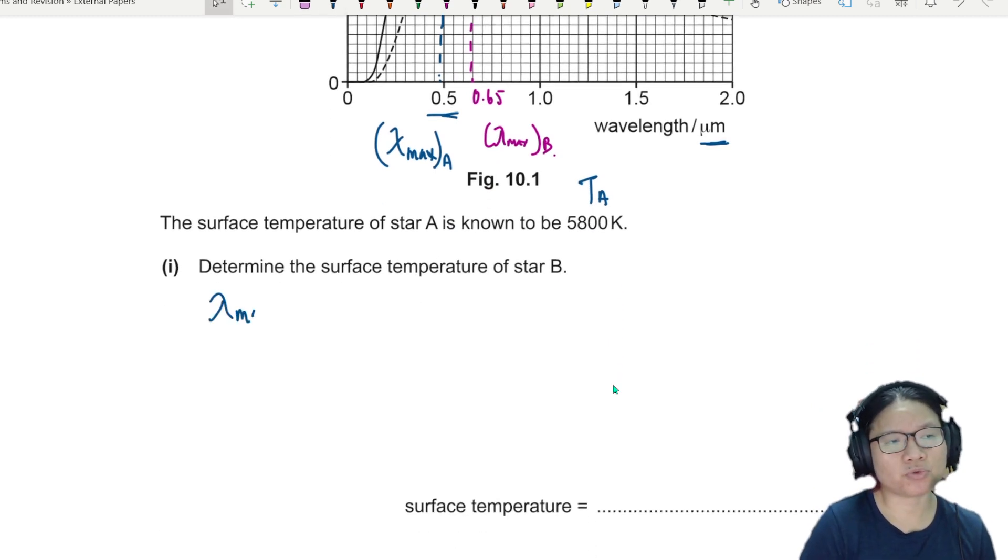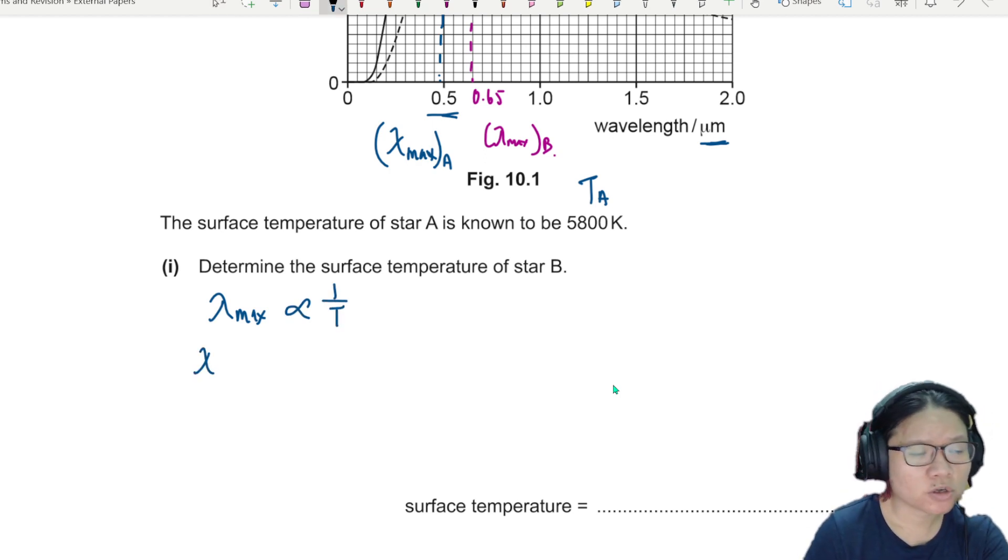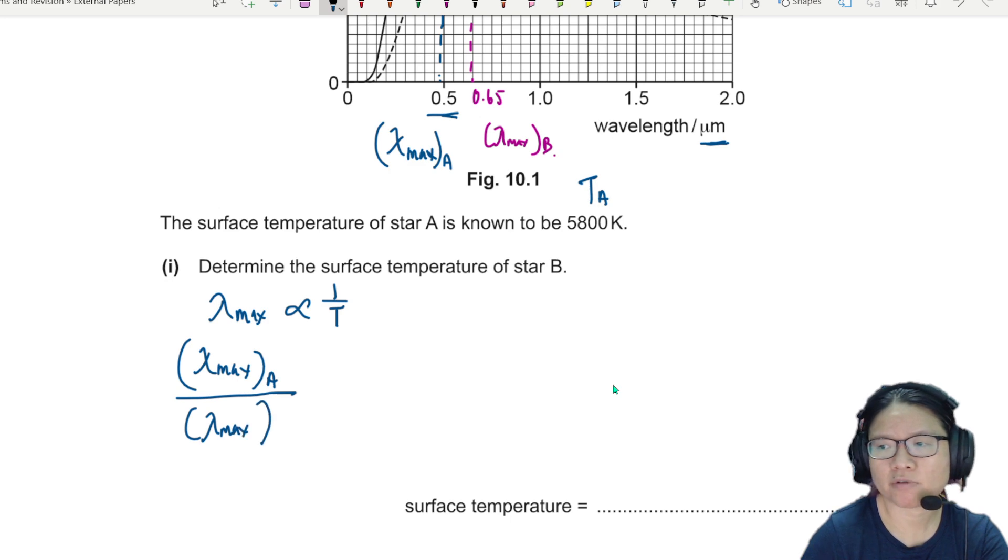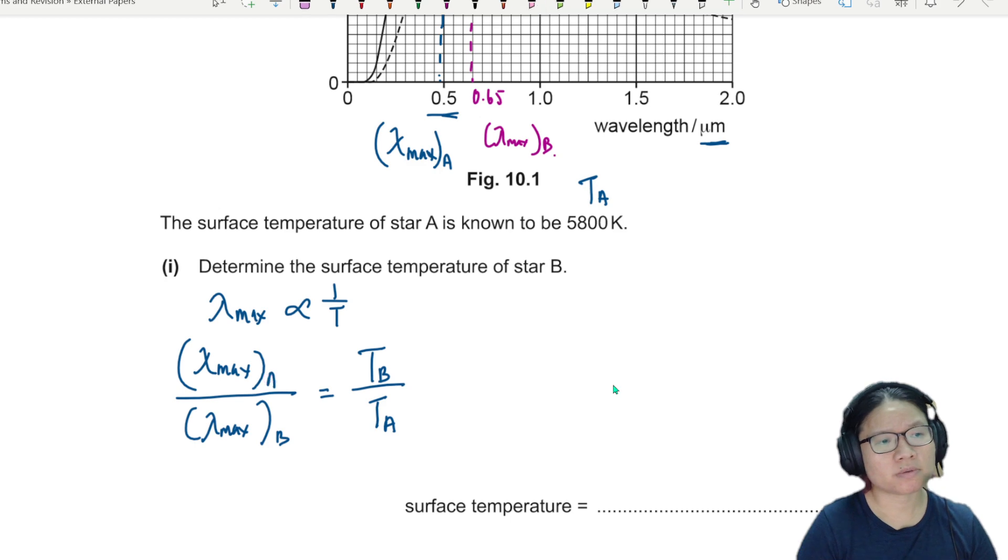Since they asked us to write down Wien's displacement, obviously, I'm going to use it inversely proportional to temperature. So I'm going to take lambda maximum for star A divided by lambda maximum for star B. This is equal to temperature of B over temperature of A. Because of the 1 over the inversely proportional, A is on top on one side, then below on the other side. So when there's 1 over, flip.